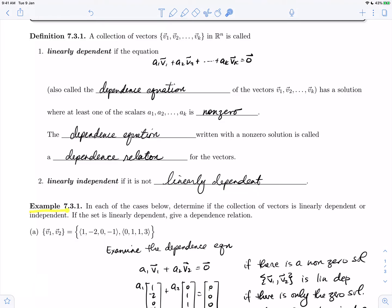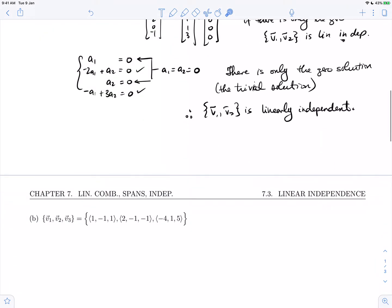Example 7.3.1 had asked us in each of the cases below to determine if the collection of vectors is linearly dependent or independent, and if the collection is dependent to give a dependence relation. We did A in a previous video. Let's go and do B.